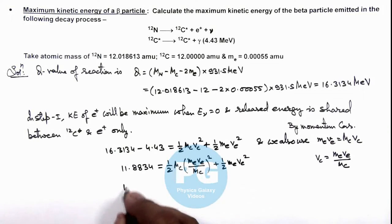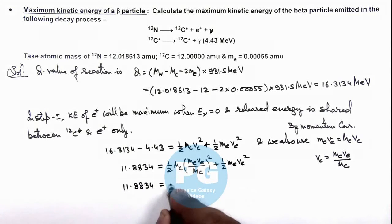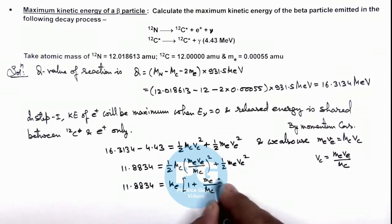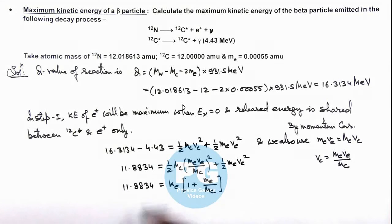So this is 11.8834 equals KEe, which is ½meve² multiplied by 1 plus me over mc. In this situation, we'll get the value of kinetic energy of the electron, which we can also write as maximum kinetic energy of the beta plus particle.